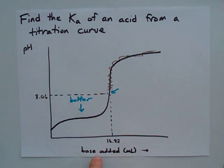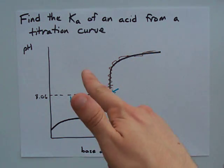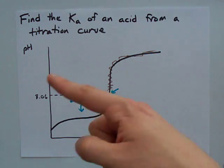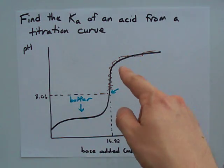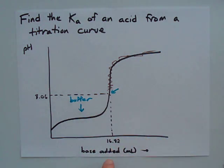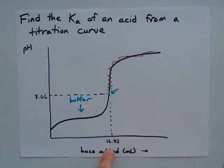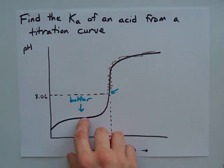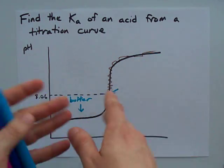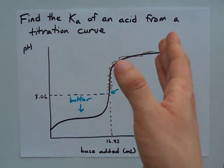So as you keep adding base, rather than creating more OH⁻ or consuming more H⁺, you're actually just converting conjugate acid into conjugate base. So the pH doesn't change very much because the H⁺ concentration isn't being affected by you adding base.